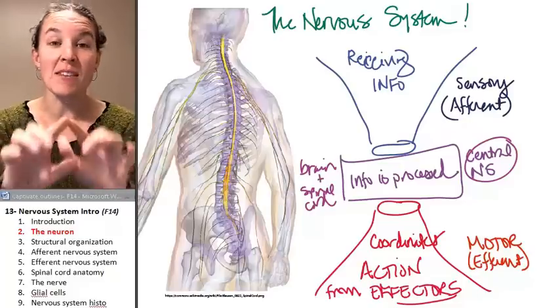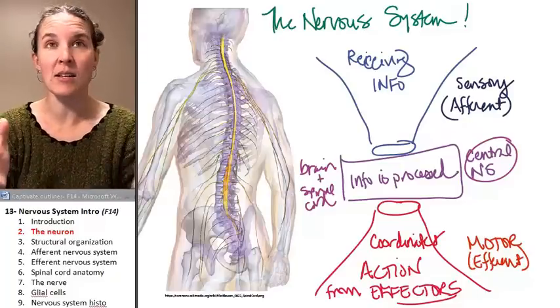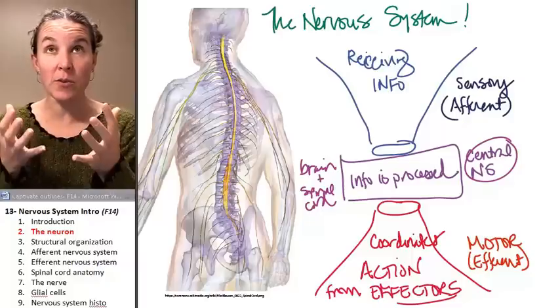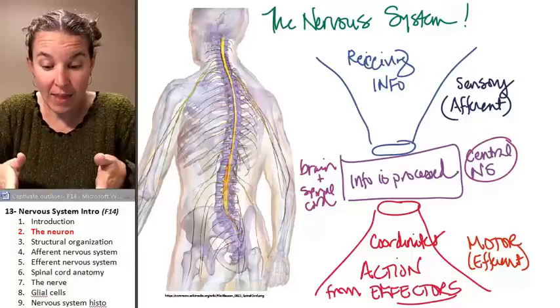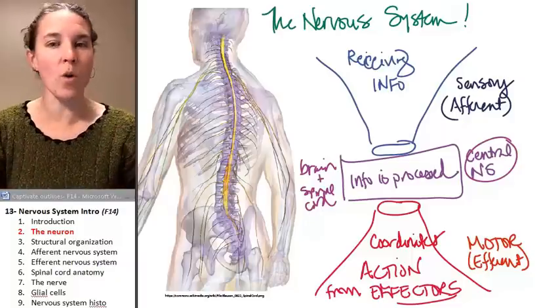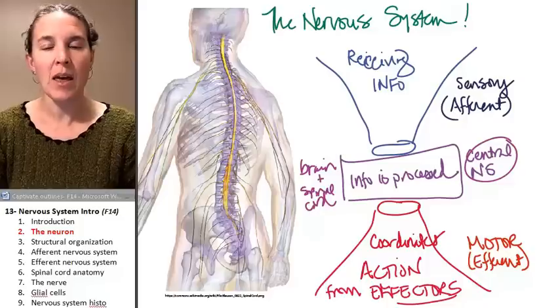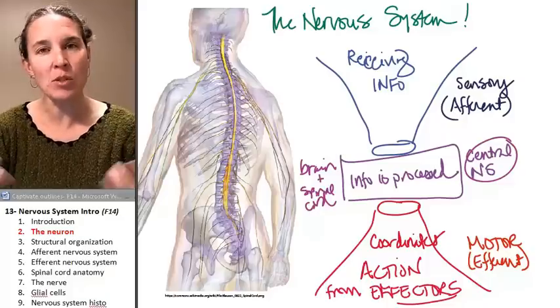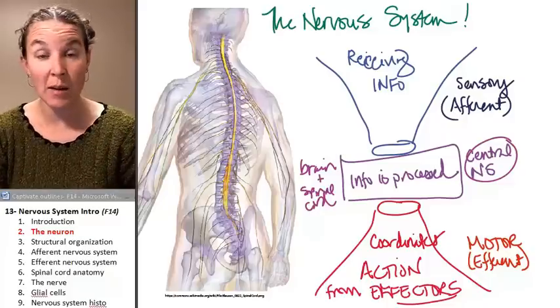If you agree that the nervous system has this job of receiving information, processing it, and then sending out an order for action, then you have to have some sort of structures that are enabling this to happen.